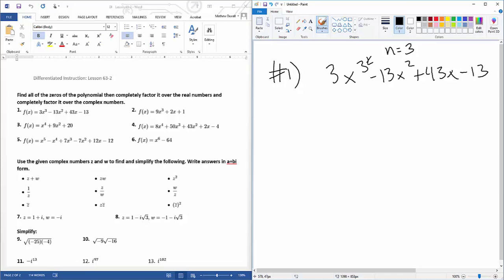So I still have to do my P's over Q's. So 1 and 13 over 1 and 3, so you get plus or minus 1, plus or minus 13, plus or minus 1 over 3, and plus or minus 13 over 3. So now let's go through and test them.